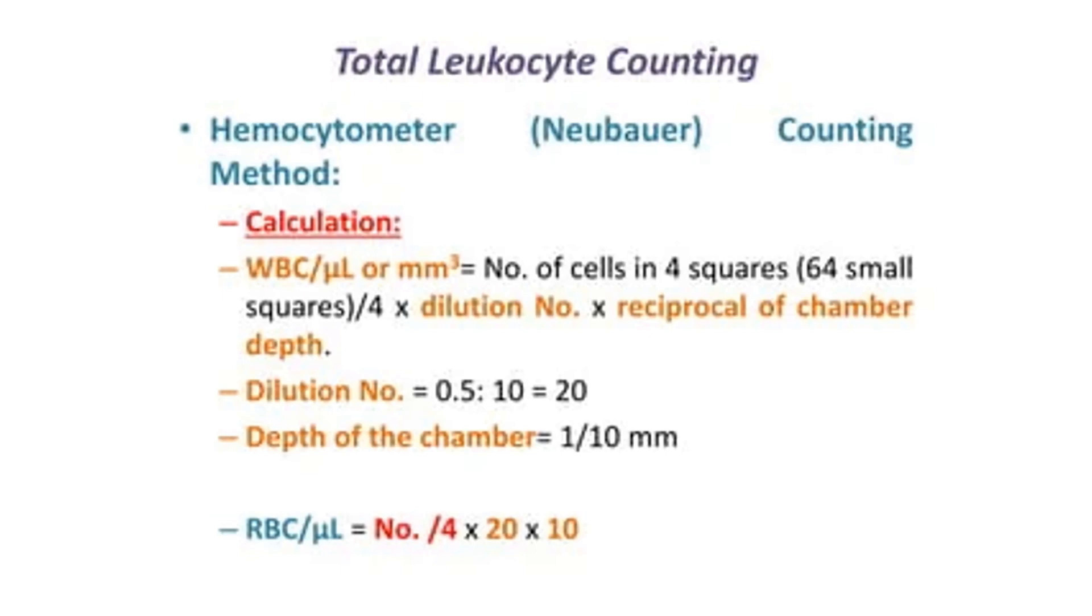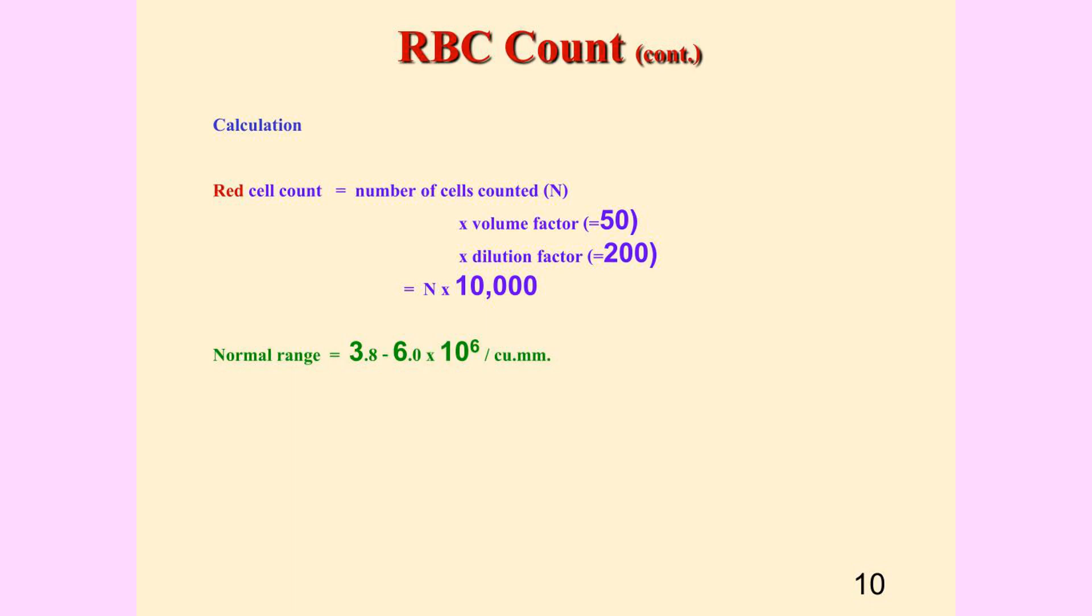Cell biology: counting and assessing the viability of cultured eukaryotic cells, such as cell lines or primary cell cultures.